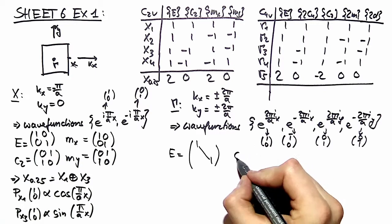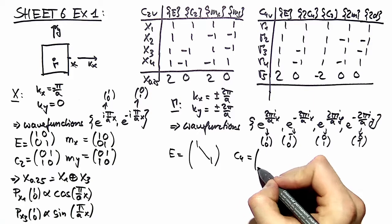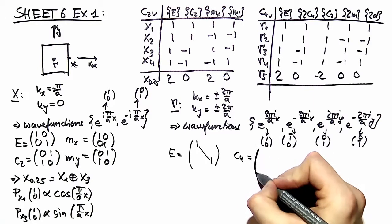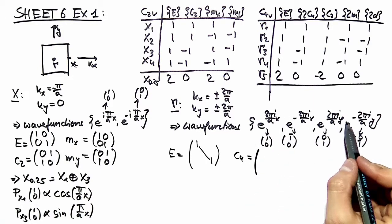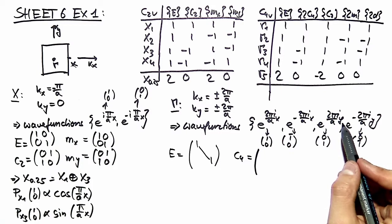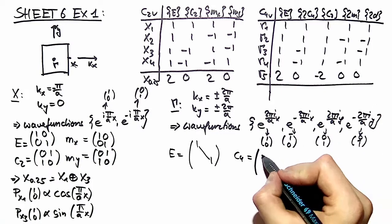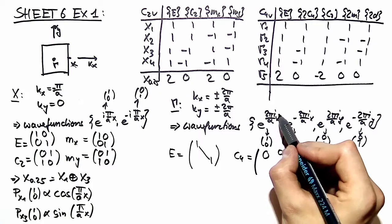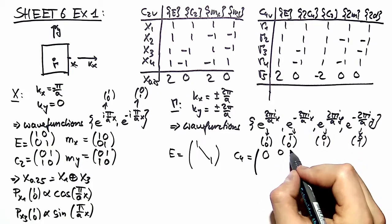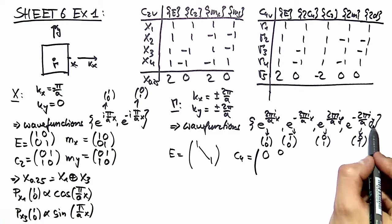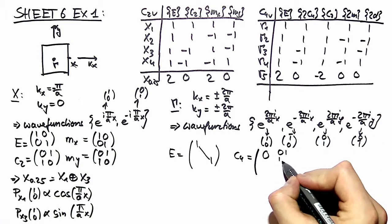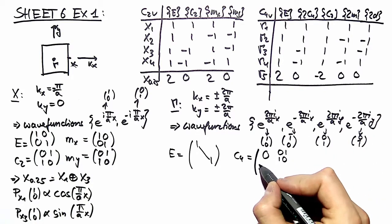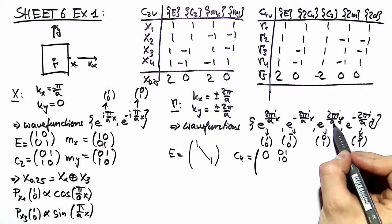When rotating by a quarter, x and y wave functions switch partners, but they switch partners in a different manner. Please be careful. Here e^(2πix/a) switches to e^(-2πiy/a).